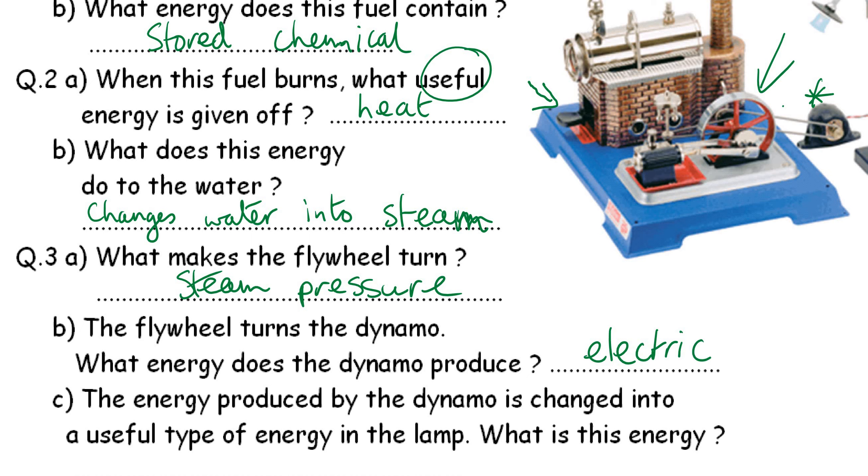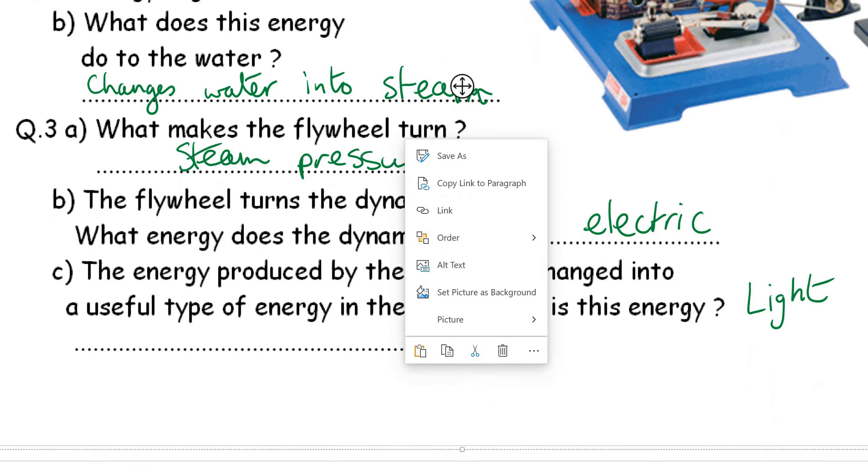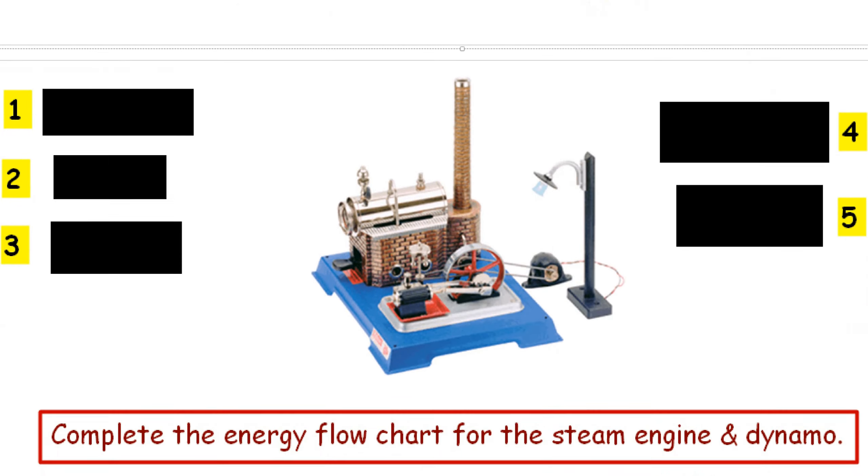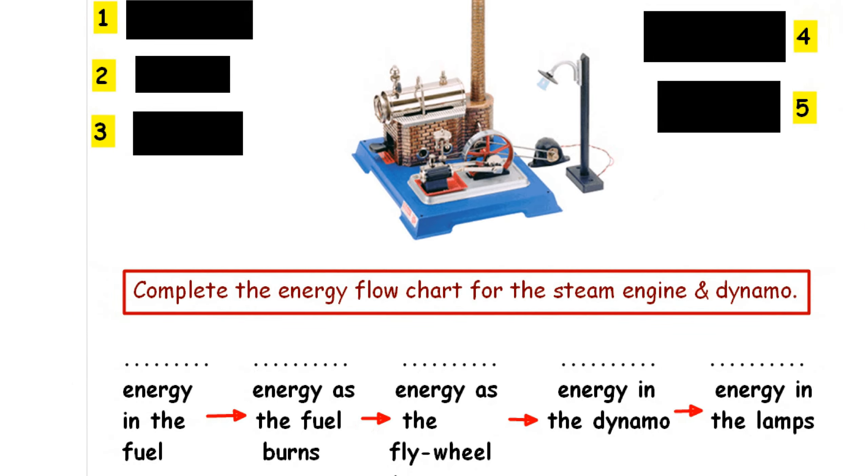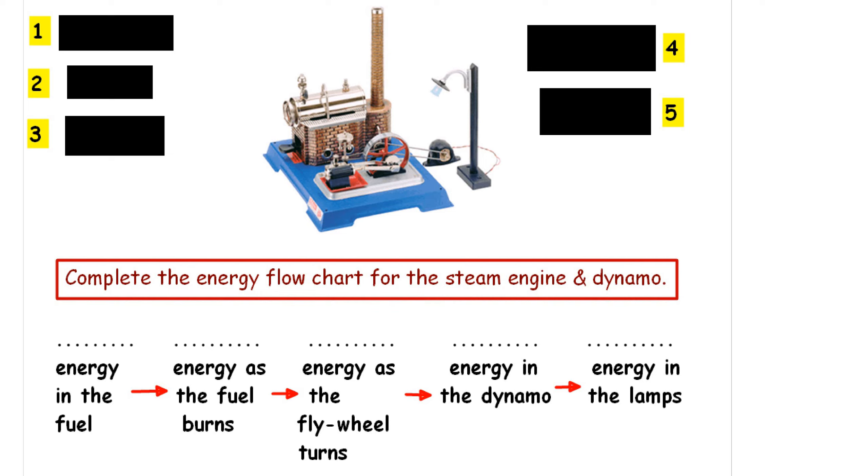The energy produced by the dynamo is changed into a useful type of energy in the lamp. What sort of energy is this? It's obviously light. Complete the energy flow chart for the steam engine and the dynamo. In the first section, we've got chemical energy in the fuel. It's converted into heat energy as the fuel burns. Kinetic energy, as the flywheel turns, is then converted into electrical energy in the dynamo. And finally, light energy in the lamps. That is the end of Lesson 6.